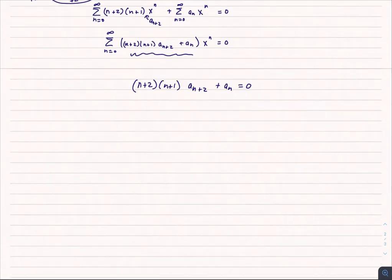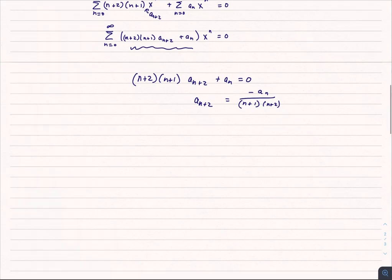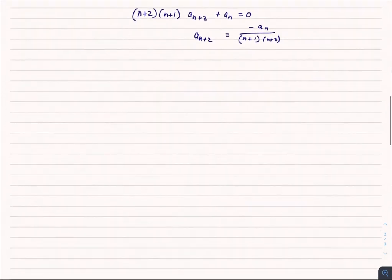And I'm going to rewrite it like this. So now I have a relationship between a_{n+2} and a_n with my n's thrown in. So what do I do? Well, you know what? I'm going to plug in some values for n and see what happens.